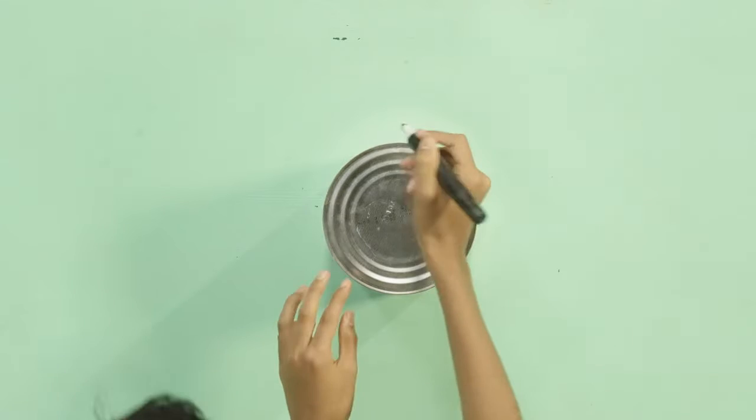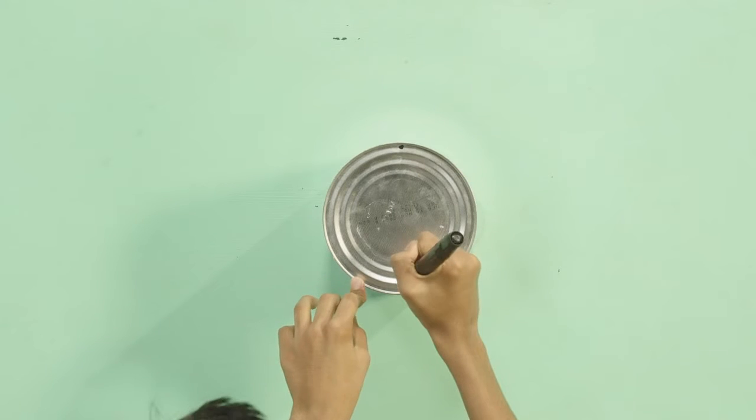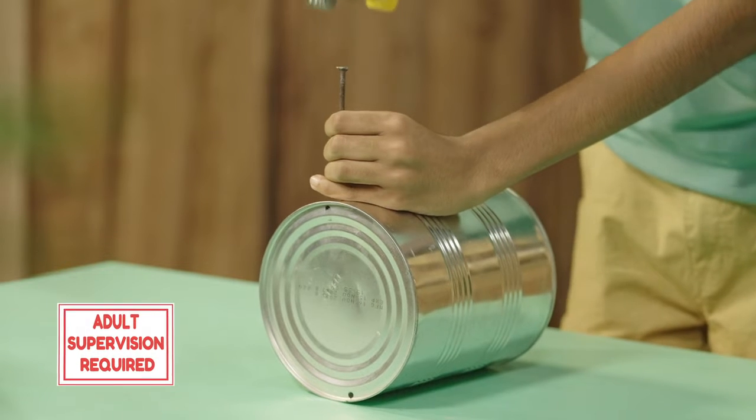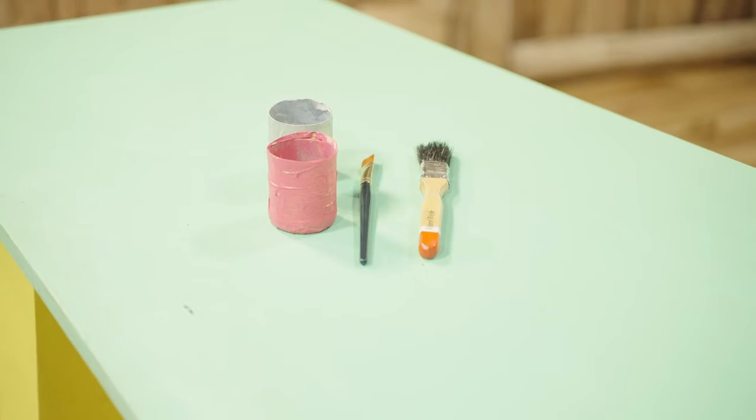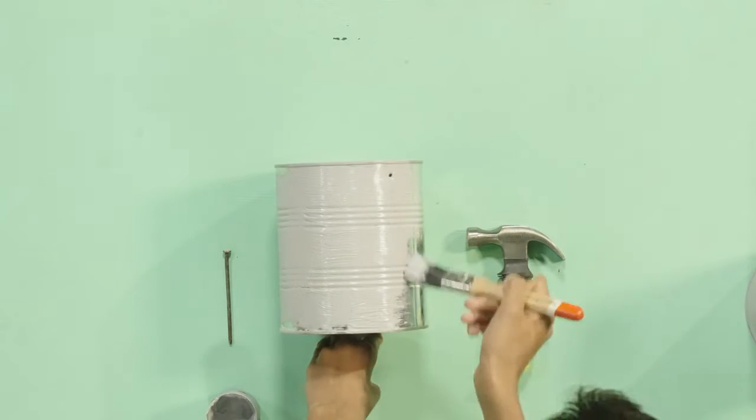Take two tins and place them on your table. Mark a point on opposite sides of the closed end of the can. Get your grey paint and a paint brush. Paint the whole elephant foot grey.